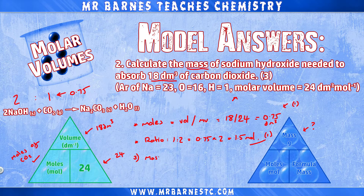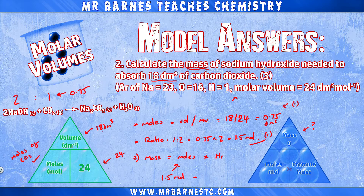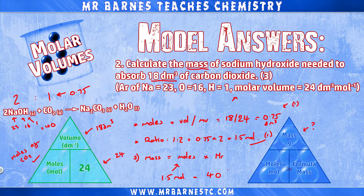Step three: work out the mass. Mass = moles × formula mass. Moles = 1.5. Formula mass of sodium hydroxide: Na (23) + O (16) + H (1) = 40. Therefore 1.5 × 40 gives a final mass of 60 grams of sodium hydroxide.